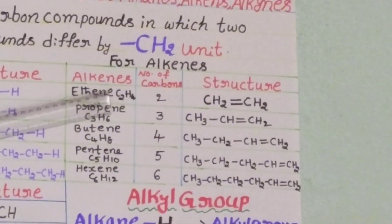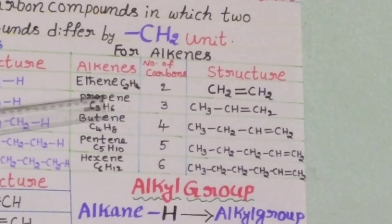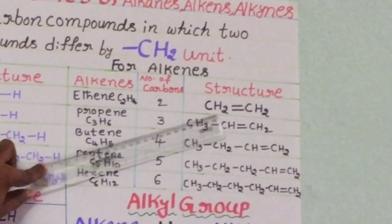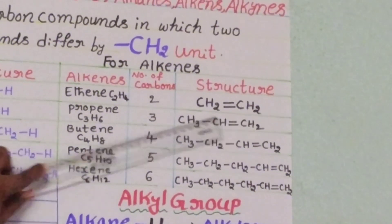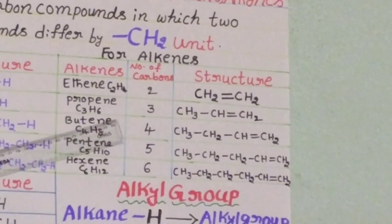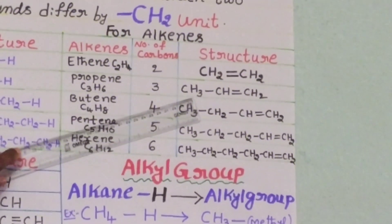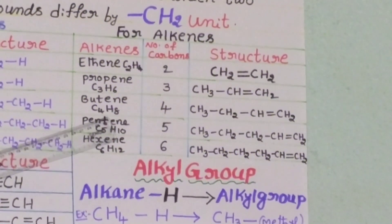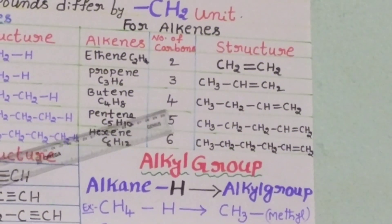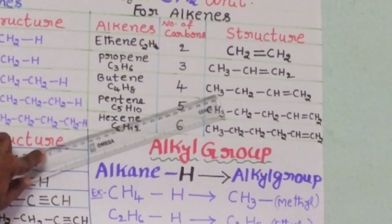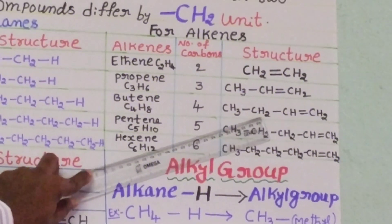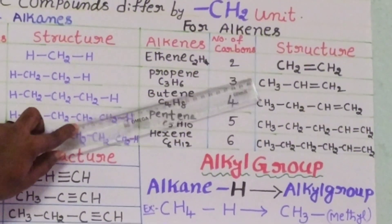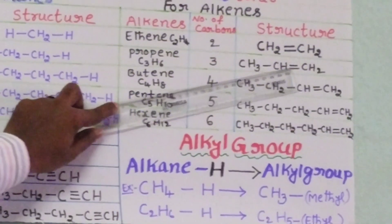Now we discuss the homologous series for alkenes. Ethene has molecular formula C2H4, containing 2 carbon atoms, and its structure is CH2=CH2. Propene has molecular formula C3H6, containing 3 carbon atoms, and its structure is CH3-CH=CH2. For butene, the molecular formula is C4H8 containing 4 carbon atoms, and its structure is CH3-CH2-CH=CH2. When we observe the first two alkenes, they differ by one CH2 unit.